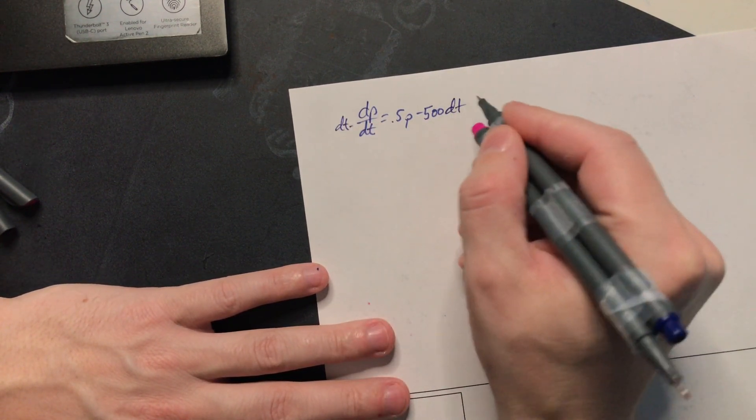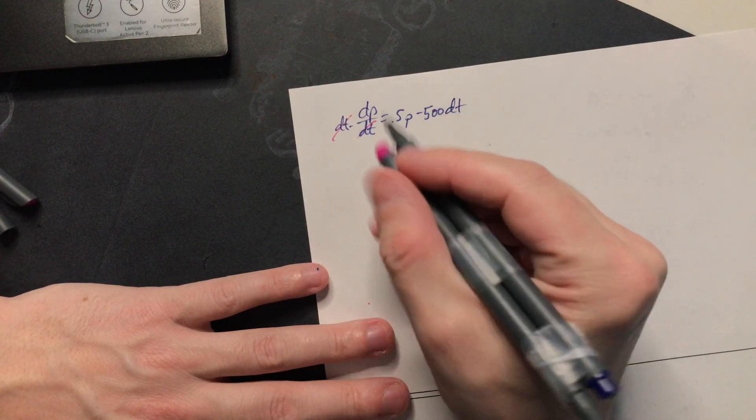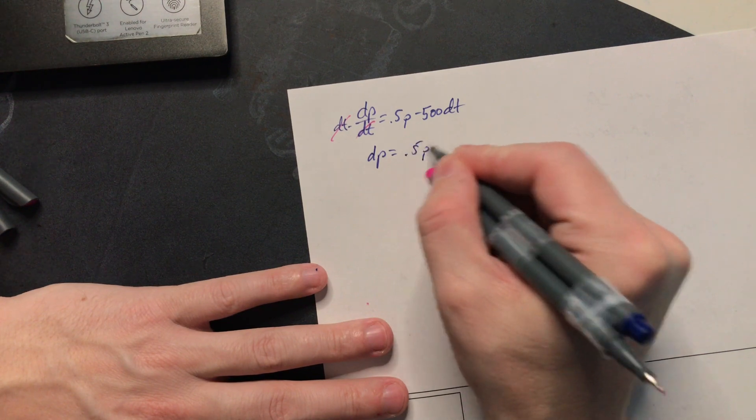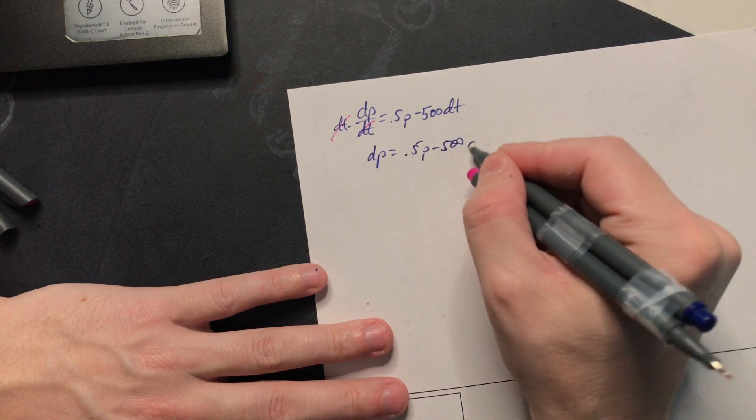It's as if you were doing this which is allowed and basically this cancels with this. So that's going to give us that dp is equal to 0.5p minus 500 and then dt.